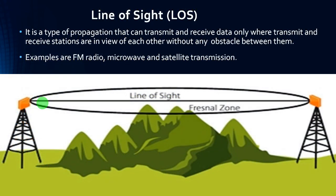Line of sight is a type of propagation that can transmit and receive data only where transmit and receive stations are in view of each other without any obstacles between them. Live examples are FM radio, microwave, and satellite transmission. Site A to Site B, without any obstacles between them, is called line of sight — that is LOS.